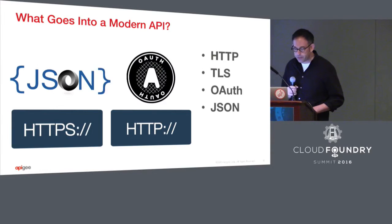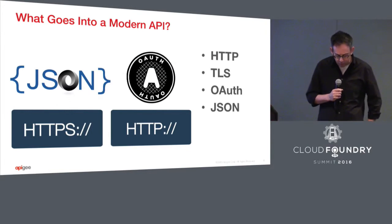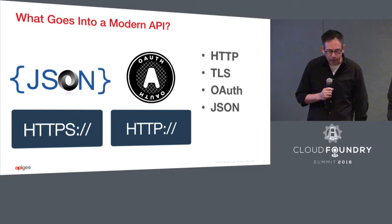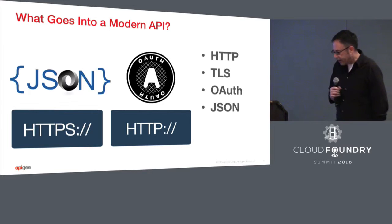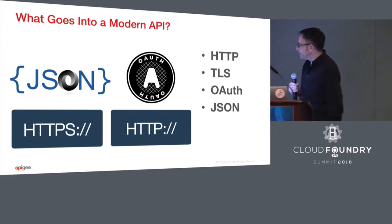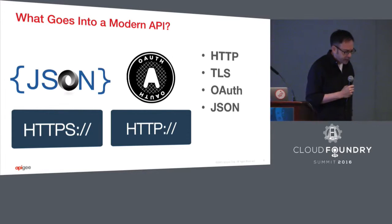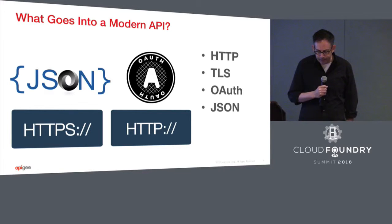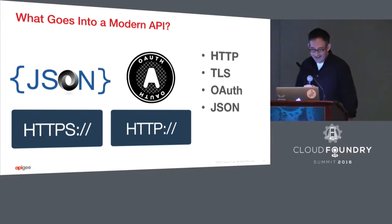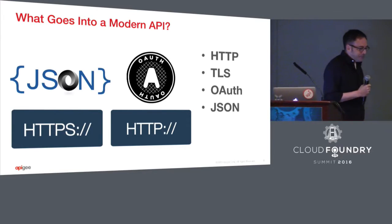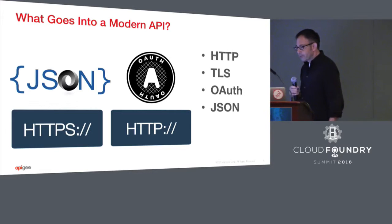In terms of what goes into modern APIs, most of our customers at Apigee are planning API initiatives, designing their APIs. Beyond the basics, most people today tend to agree they should be JSON-based. If you're still building XML APIs in 2016, you probably have a good reason for it, but it's probably because somebody made you do it. Generally, people are converging around OAuth and so forth.